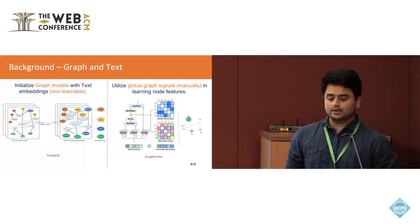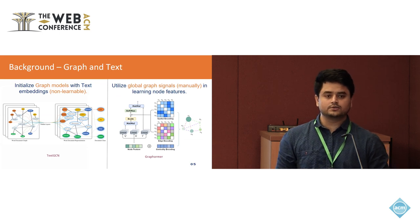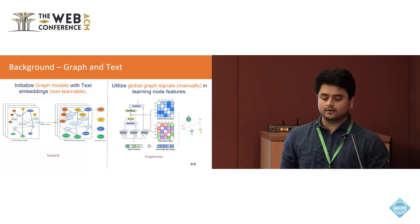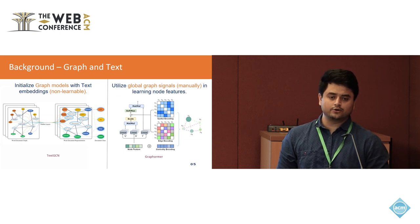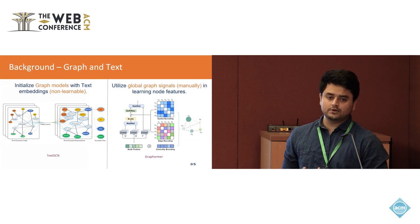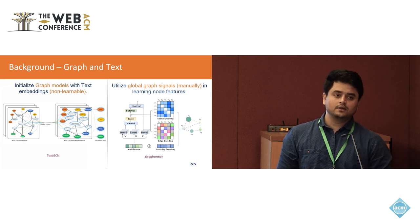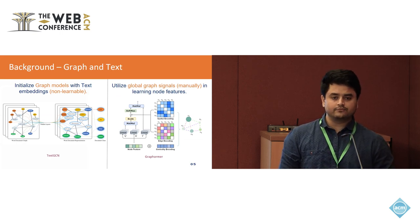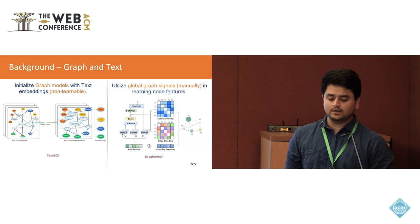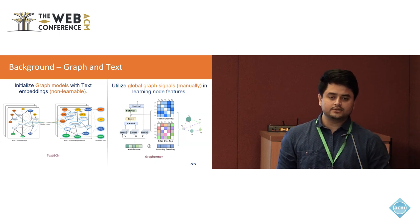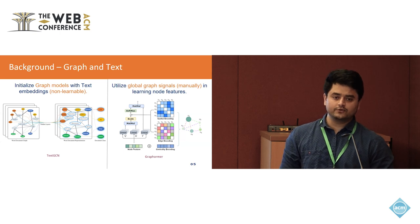Looking at the background in this area, there's the Text GCN approach, where we use text as node features and then apply a GCN layer on top of the available graph. The second approach is GraphFormer, where they used node features and added manually created global graph signals such as centrality encoding, spatial encoding, and edge encoding, then applied a transformer network on top for classification.